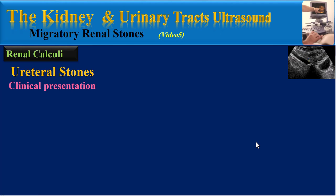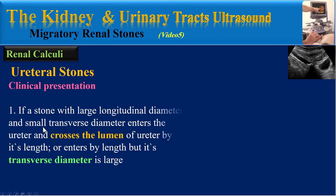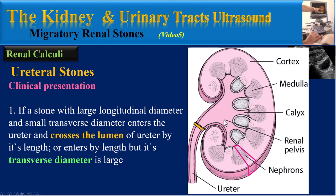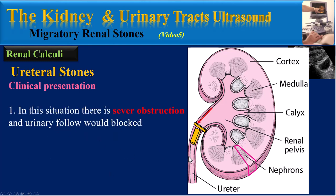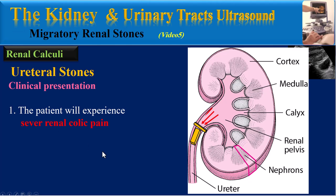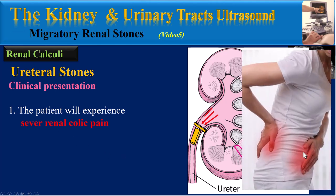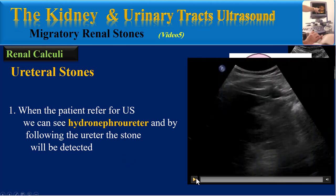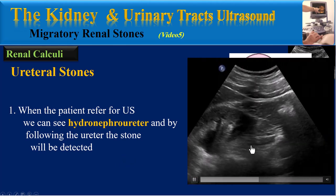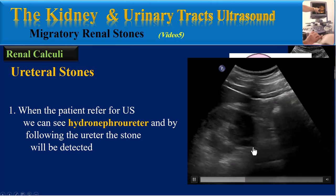In ureteral stones we may have several scenarios. First, if a stone with a large longitudinal diameter and small transverse diameter enters the ureter and crosses the lumen by its length, or enters by length but its transverse diameter is large, there is severe obstruction and urinary flow is blocked. The patient will experience severe renal colic pain, and on ultrasound we can see hydronephroureter; by following the ureter the stone will be detected.